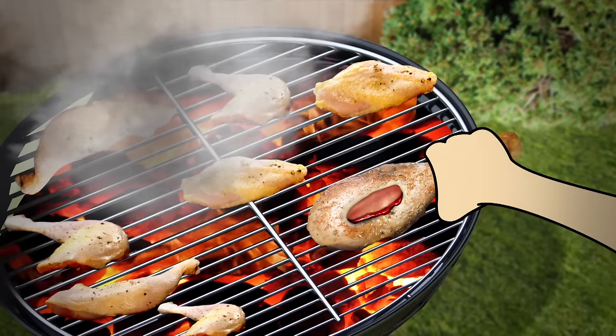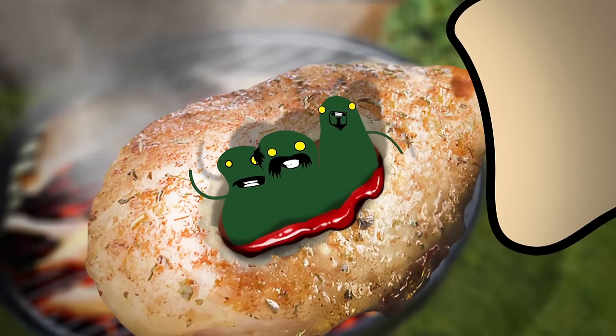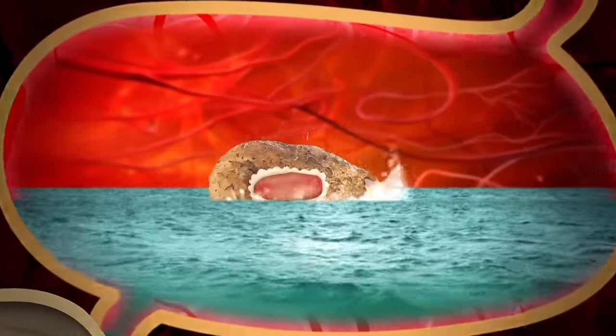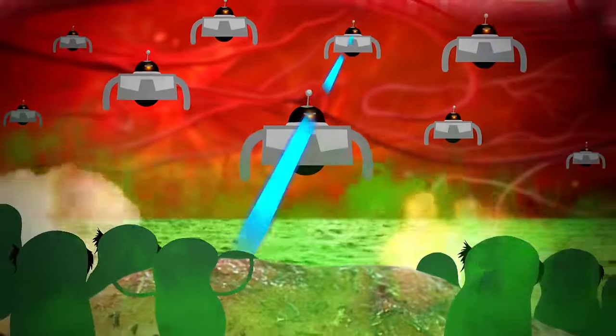Food that's gone off or hasn't been cooked correctly can contain harmful bacteria that attack your body. But your body fights back. Immune cells in your tummy try to kill the bad bacteria.